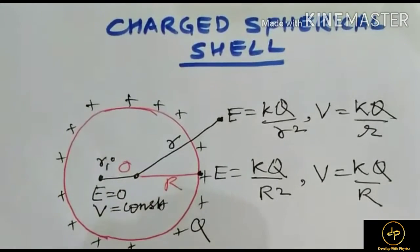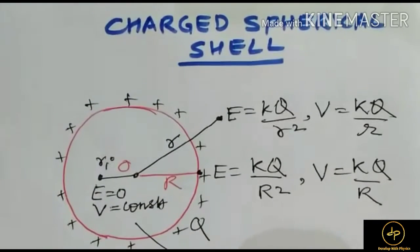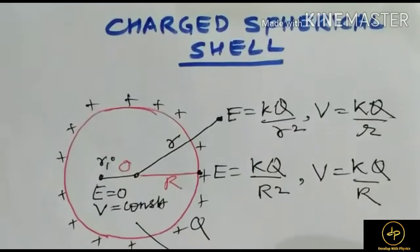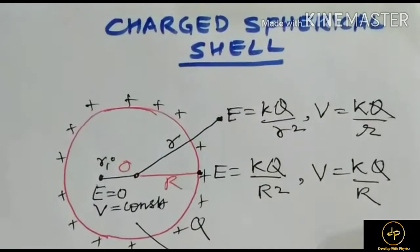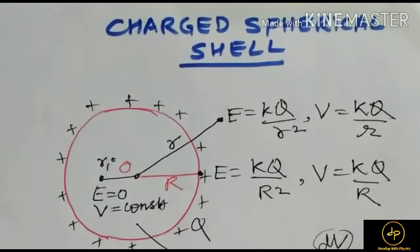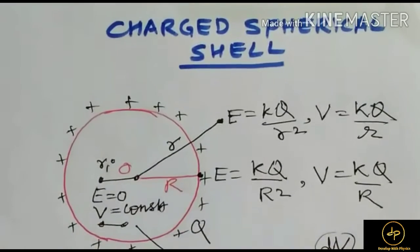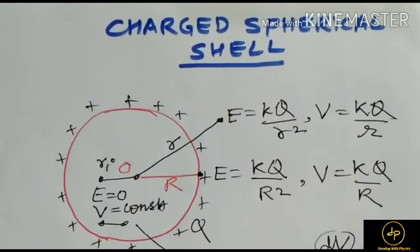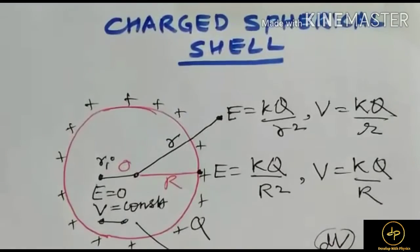Inside this shell, the potential is constant. Why? Because we know that the field equals zero inside. Field is zero, which equals -dV/dr, the change in potential with distance. If change in potential is zero, it means ΔV is zero, so there is no change in potential.